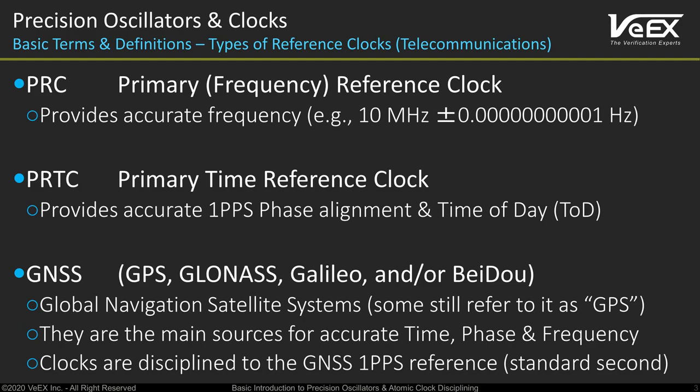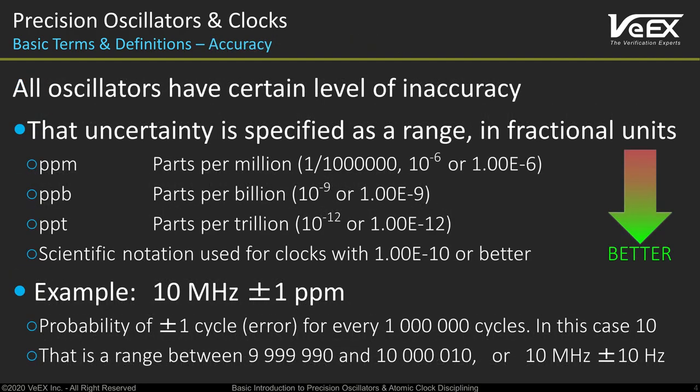Time, timing, or phase synchronization are used in modern networks to align multiple geographically distributed network elements. One big example are the 4G and 5G mobile networks using time division duplexing, in which having the same time helps in knowing exactly when devices can transmit to avoid collisions and errors, and maximize the use of the available bandwidth.